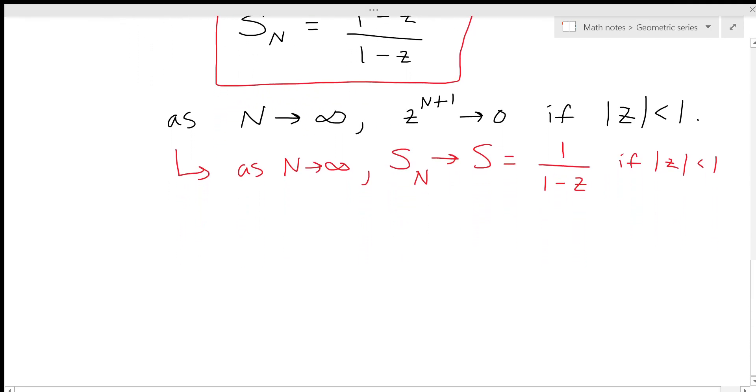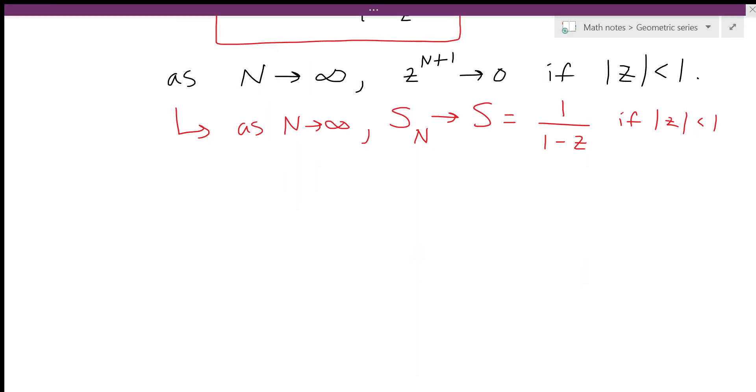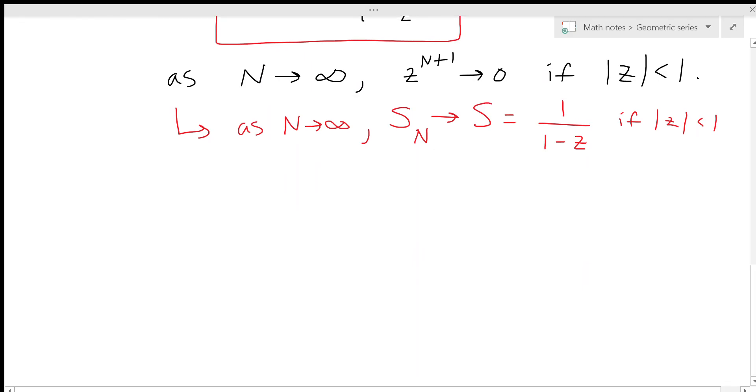So the end result is that if absolute value of z is less than 1, then our geometric series converges to this value S equal to 1 divided by 1 minus z. And that completes this lesson.